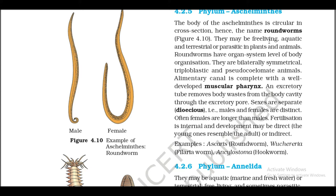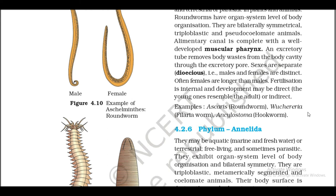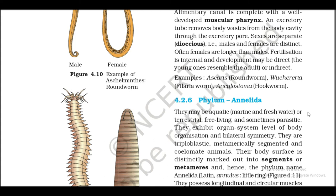Roundworms have organ system level of body organization. They are bilaterally symmetrical, triploblastic, and pseudocoelomate animals. The alimentary canal is complete with a well-developed muscular pharynx. An excretory tube removes body waste from the body cavity through the excretory pore. Sexes are separate — dioecious — that is, males and females are distinct. Often females are longer than males. Fertilization is internal and development may be direct, where the young ones resemble the adult, or indirect. Examples: Ascaris (roundworm), Wuchereria (filarial worm), Ancylostoma (hookworm).